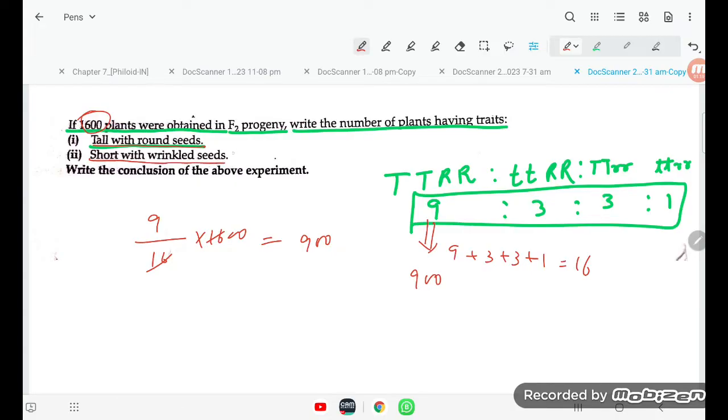Short with wrinkle seed. So short and wrinkle seed, how much will come student? 1 divided by 16 into 1600. This is TTRR I am going, and this was the capital T capital T capital R capital R.